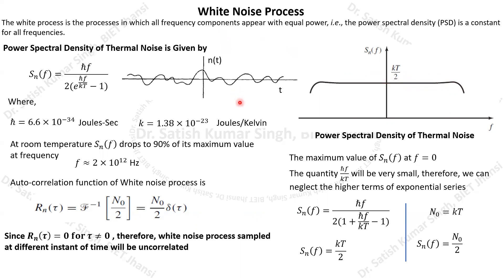If asked whether the white noise process has a flat PSD for all frequencies from zero to infinity, the answer is no. However, in comparison to our communication range — up to 300 or 400 GHz — the spectrum is flat within that range. Beyond that, a decrease in the power spectral density can be observed. This is the key point to remember.